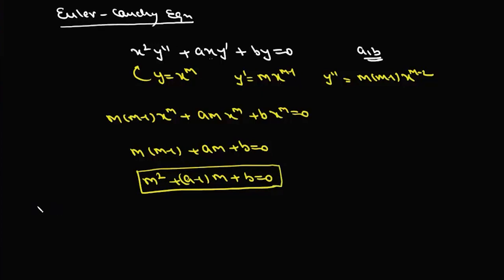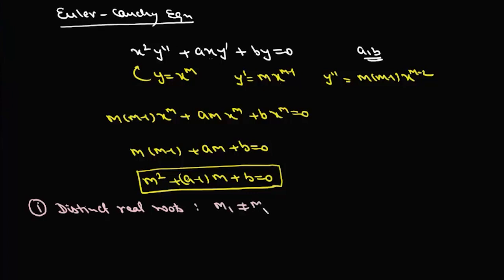Now we will have three cases. Case 1 is when we have distinct real roots. Suppose the distinct real roots are m₁ and m₂. In this case the solution is given by y = c₁x^(m₁) + c₂x^(m₂).